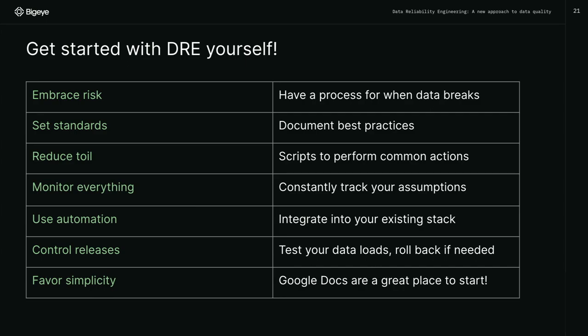You can control your releases — just test your data, test your data loads. Create staging tables for changes. If you're going to update an ETL or any sort of external data load, load it to a side table, then compare that to the production table. And don't be afraid to roll back — part of releasing and having a release process includes rolling back. It's not defeat. There's nothing shameful in saying I made a mistake, this shouldn't go to production. You can roll your code back and switch it back to the original state.